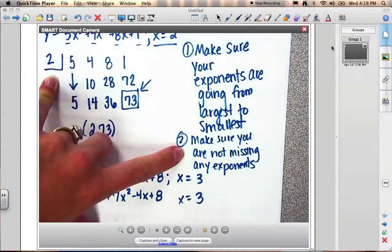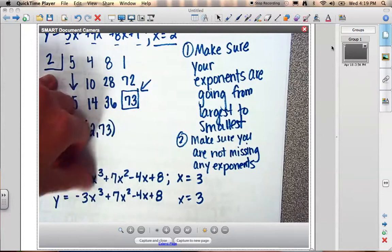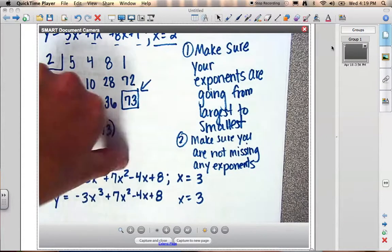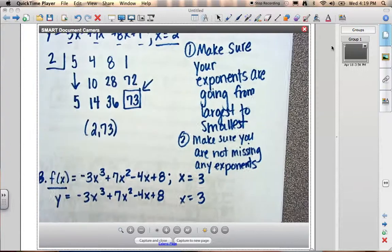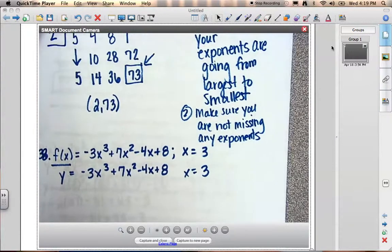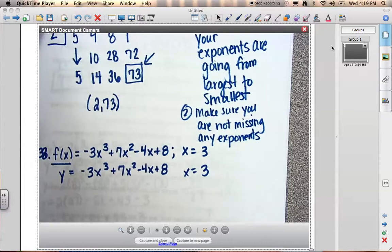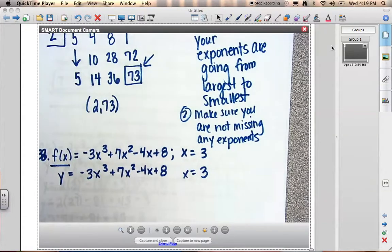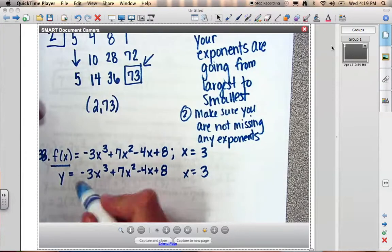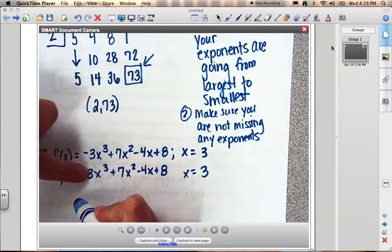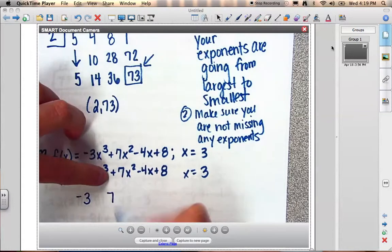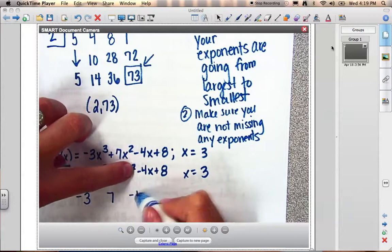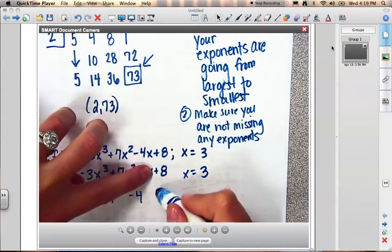Second thing, I need to make sure there's not any missing exponents. Since I started with the 3, I got 2, I have 1, and then I have nothing. I'm not missing anything. So when I use synthetic division for this, or excuse me, I'm saying division because that's what we'll use tomorrow, but it's really synthetic substitution in your book. I'm going to use the numbers in my problem. I'm going to use negative 3, followed by the 7, followed by the negative 4, followed by the 8.